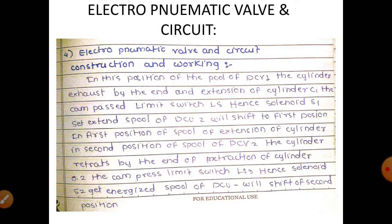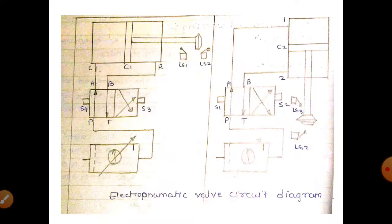Next, the circuit is an electro-pneumatic valve. This is an electro-pneumatic valve circuit diagram. It consists of an FRL unit and a directional control valve.